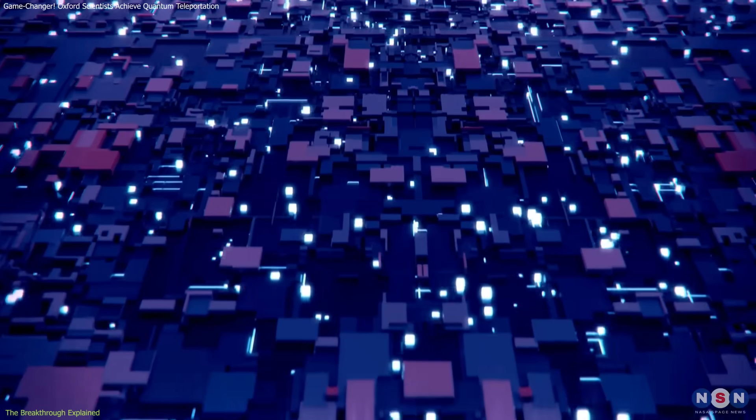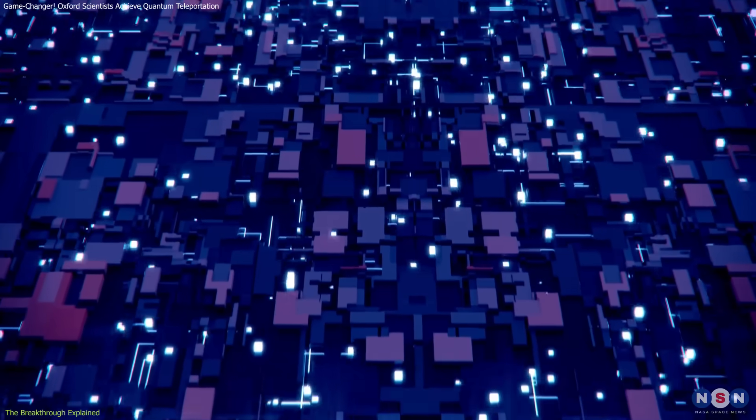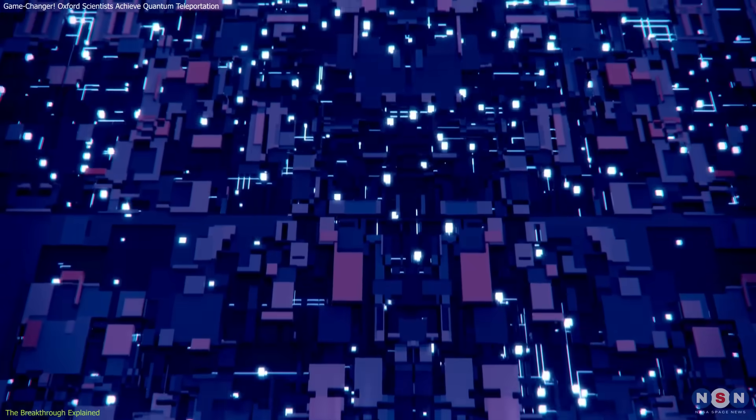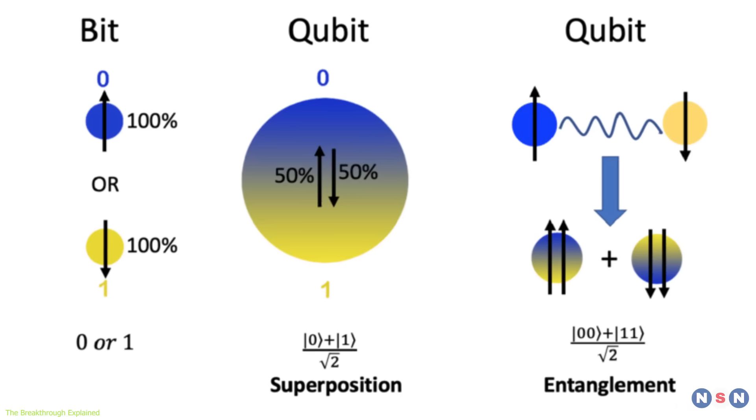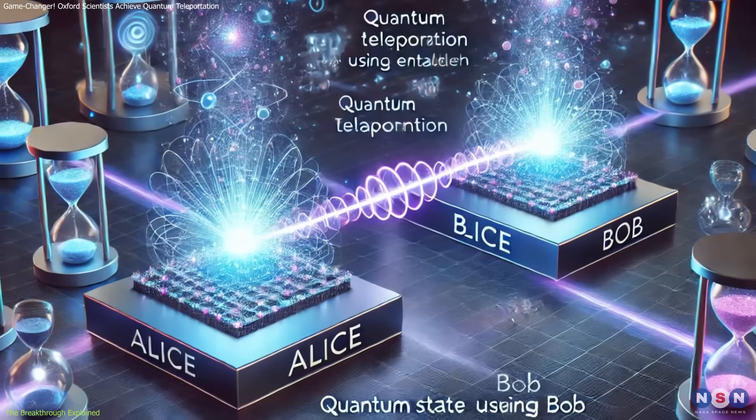In quantum computing, these operations are performed on quantum bits or qubits, which can exist in multiple states simultaneously due to a property known as superposition.